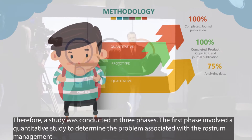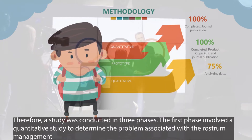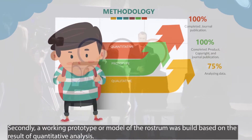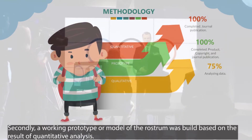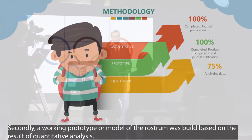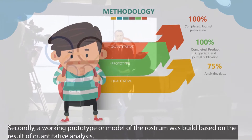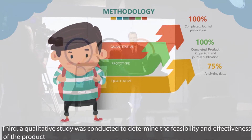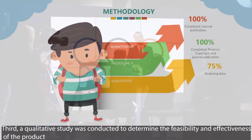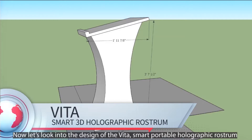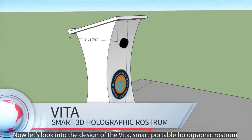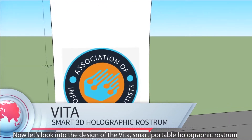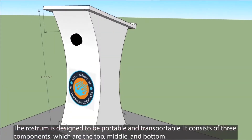The first phase involved a quantitative study to determine the problems associated with rostrum management. Secondly, a working prototype or model of the rostrum was built based on the results of the quantitative analysis. Third, a qualitative study was conducted to determine the feasibility and effectiveness of the product.